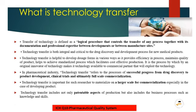Technology transfer is both integral and critical to the drug discovery and development process for new medical products. Technology transfer is helpful to develop dosage forms in various ways as it provides efficiency in process, maintains the quality of the products, helps to achieve a standardized process, which facilitates cost-effective production. It is a process by which an original innovator of technology makes the technology available to a commercial partner that will exploit the technology. We have a recent example — 2DG glucose — which has been used for treatment of COVID-19, developed by DRDO, and that product was transferred for manufacturing to Dr. Reddy's Laboratories.